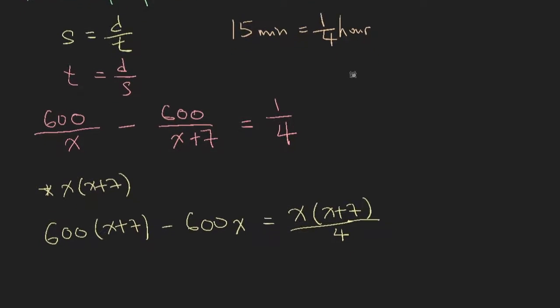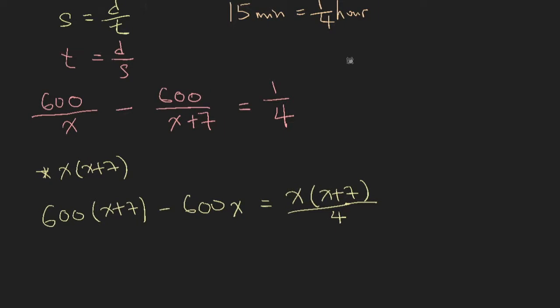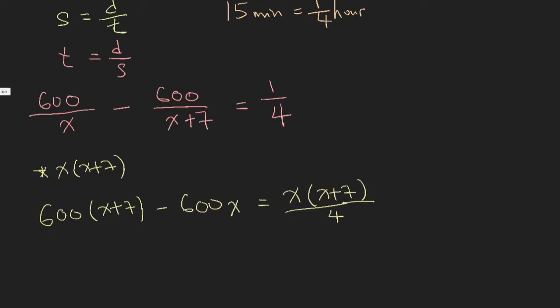We carry on what we are doing. Multiply both sides with 4, and you will have 2400x plus 7 minus 2400x equals to x squared plus 7x, because I'm just going to multiply the x inside.